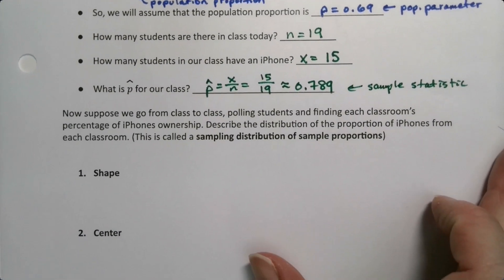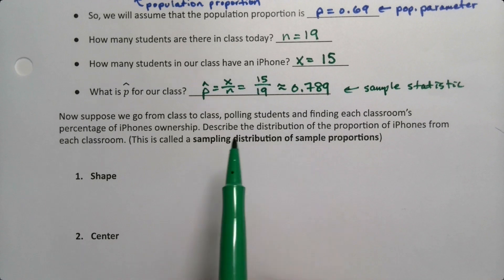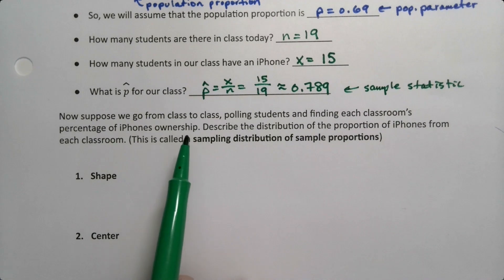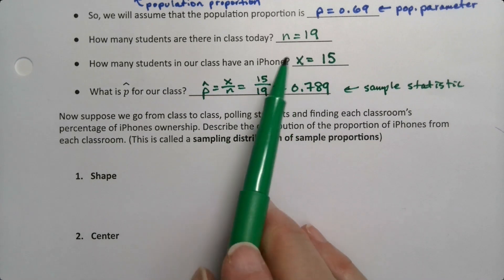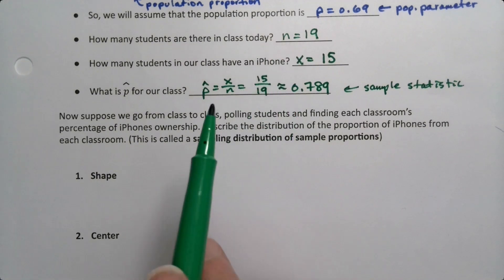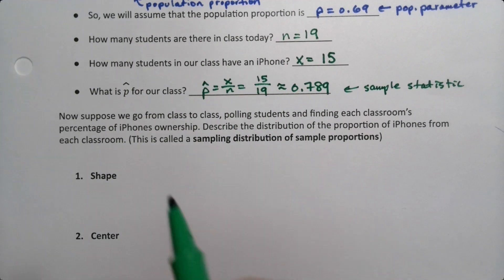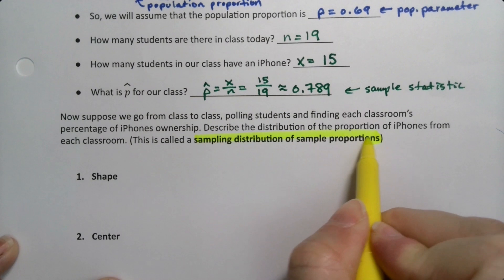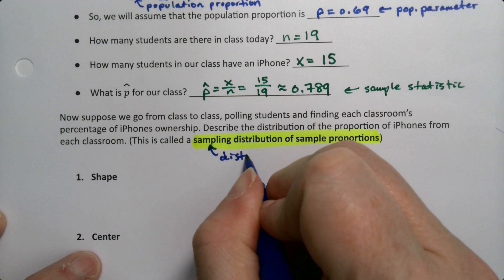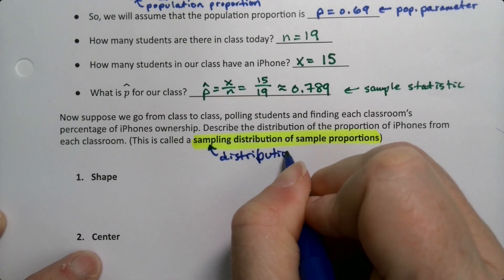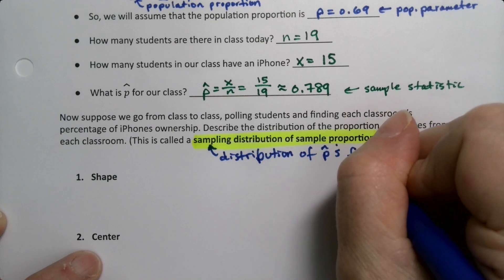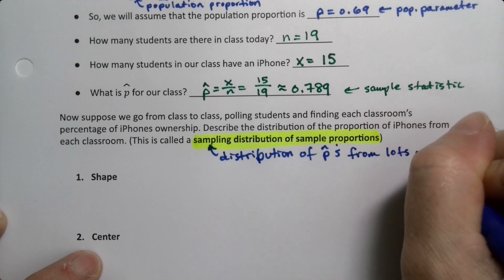Now suppose we walk around the building and go from class to class, polling students and finding each classroom's percentage of iPhone ownership — counting how many students there are and how many have an iPhone, over and over again. That's called the sampling distribution of sample proportions: we're taking multiple P-hats from multiple different samples, so it's the distribution of P-hats from lots of samples.